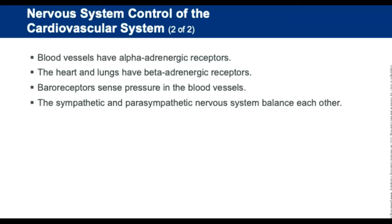The parasympathetic nervous system causes the heart rate to slow and beat more weakly — almost the opposite of the sympathetic system. The two systems balance each other. Baroreceptors sense pressure in the blood vessels, found in the aorta and carotid bodies, and their stimulation causes the sympathetic and parasympathetic nervous systems to adjust blood pressure.